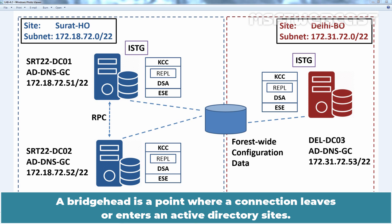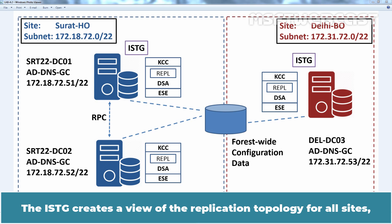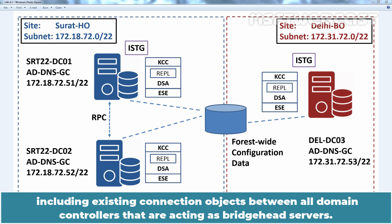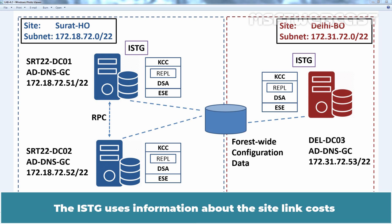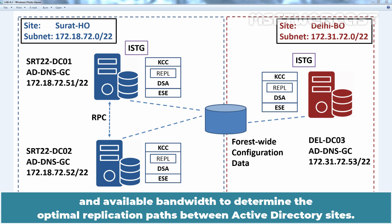A Bridgehead server is a point where a connection leaves or enters an Active Directory site. The ISTG creates a view of the replication topology for all sites, including existing connection objects between all domain controllers that are acting as Bridgehead servers. The ISTG also creates inbound connection objects for servers in its site — that is, it determines who will act as a Bridgehead server. The ISTG uses information about site link cost and available bandwidth to determine optimal replication paths between Active Directory sites.